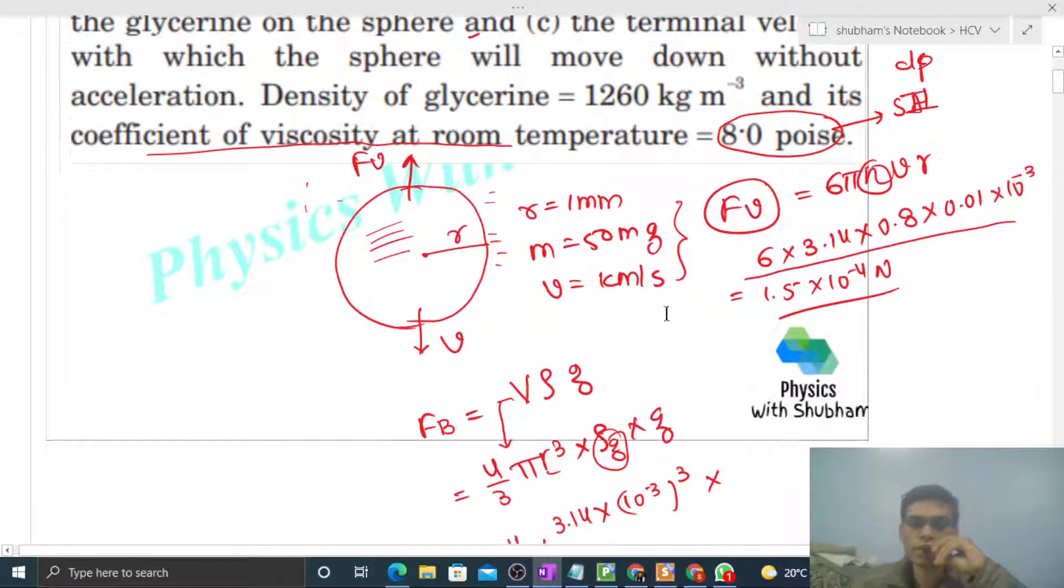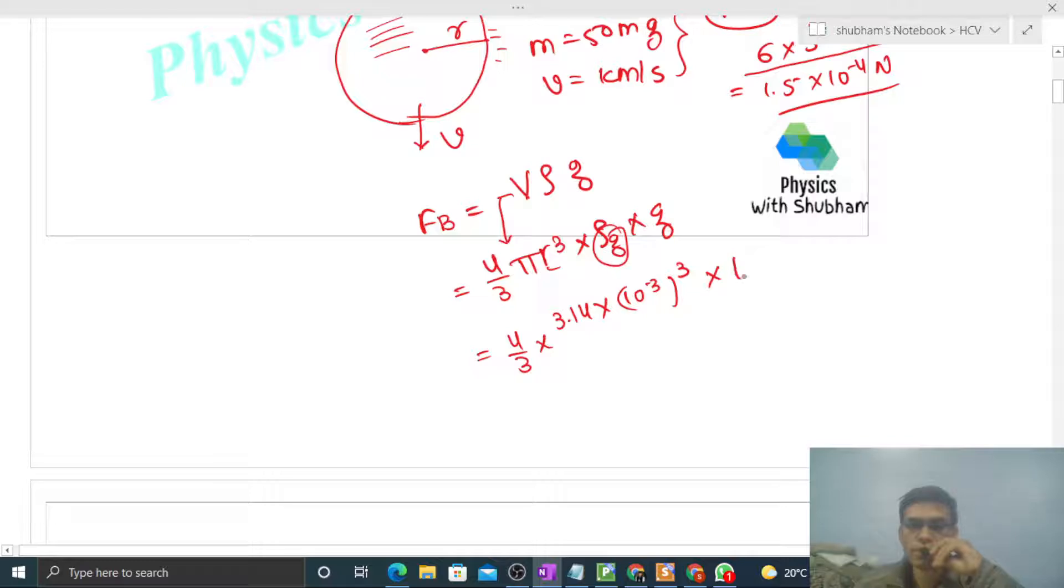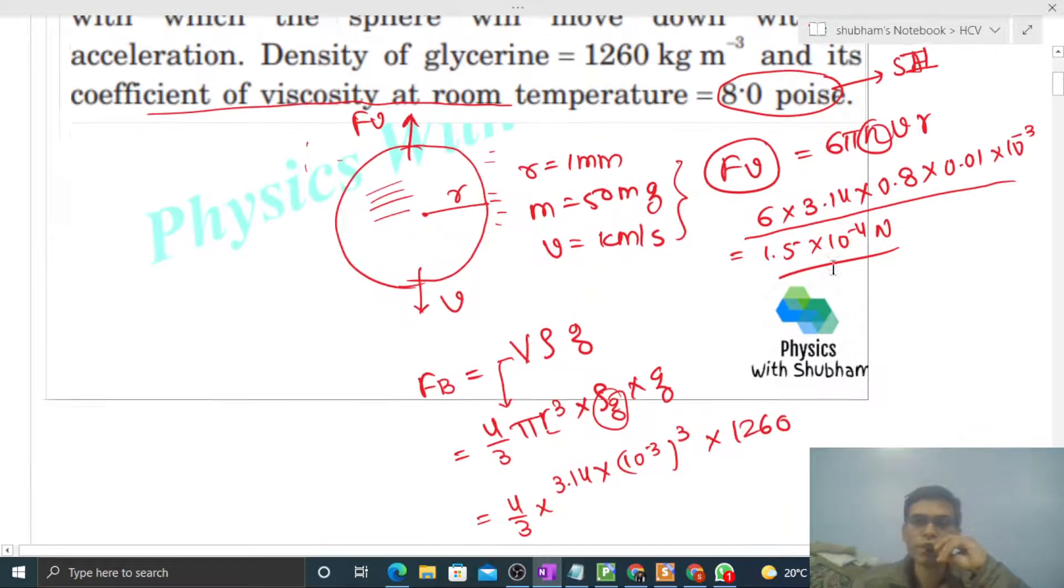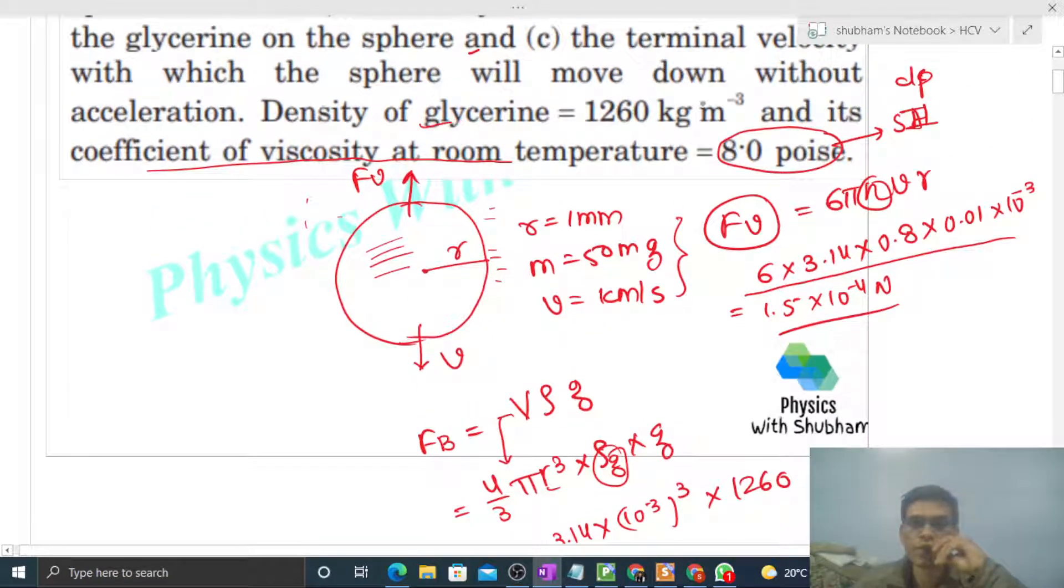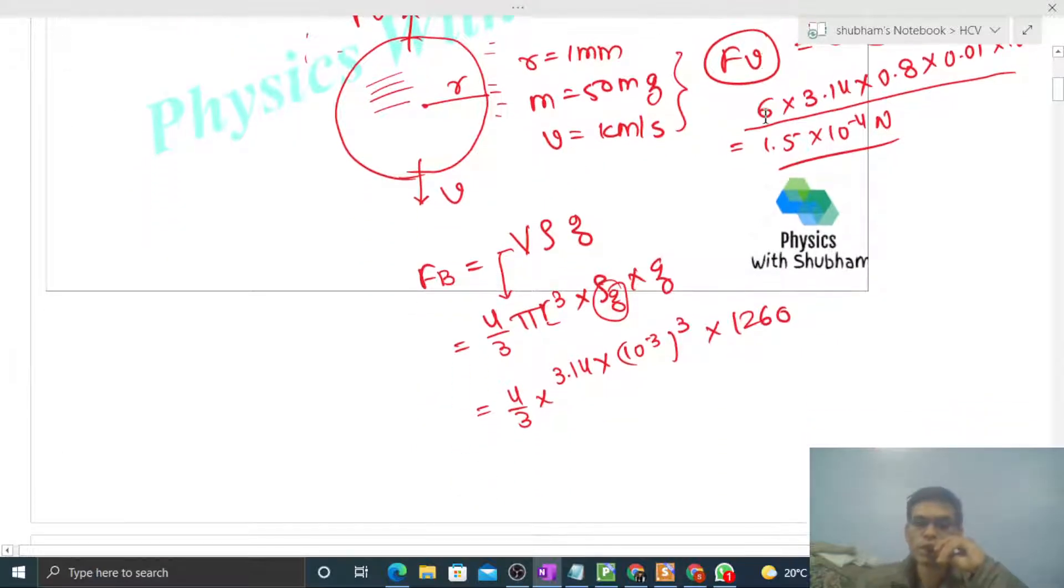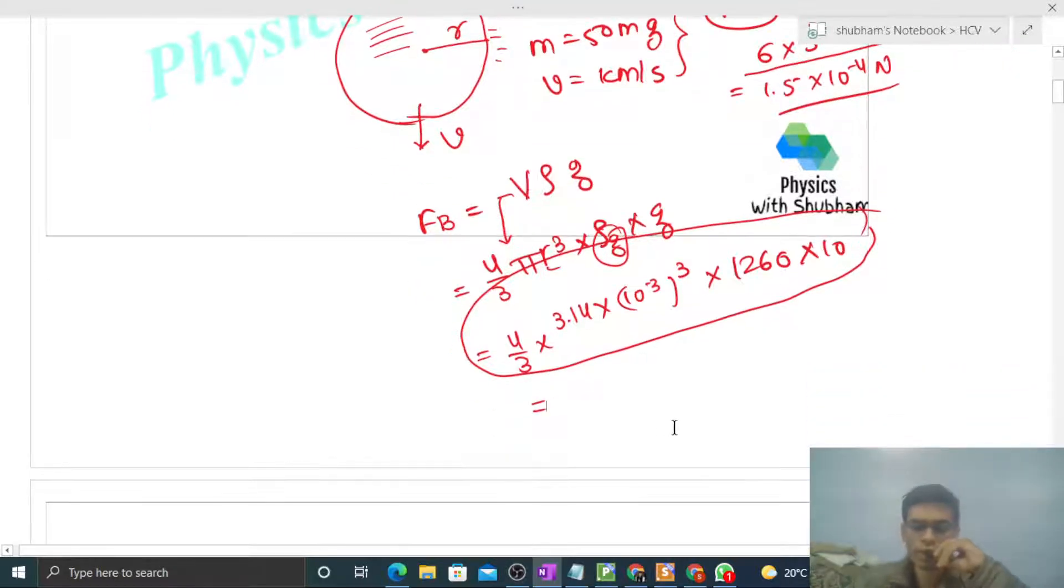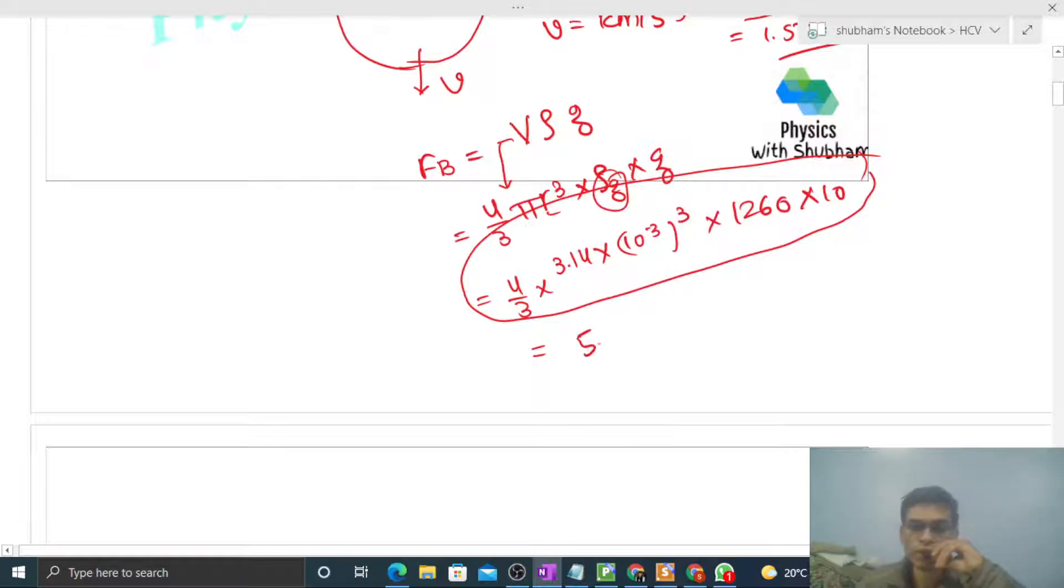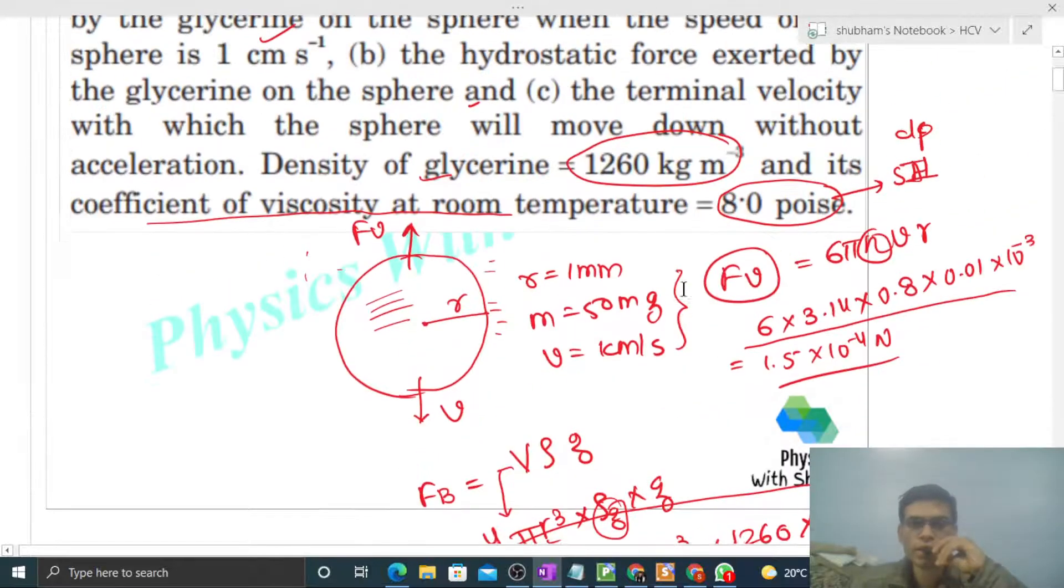Times the density of glycerin, 1260 kg/m³, times g, which is 10. You can calculate this yourself - it will be around 5.2 × 10^-5 newton.